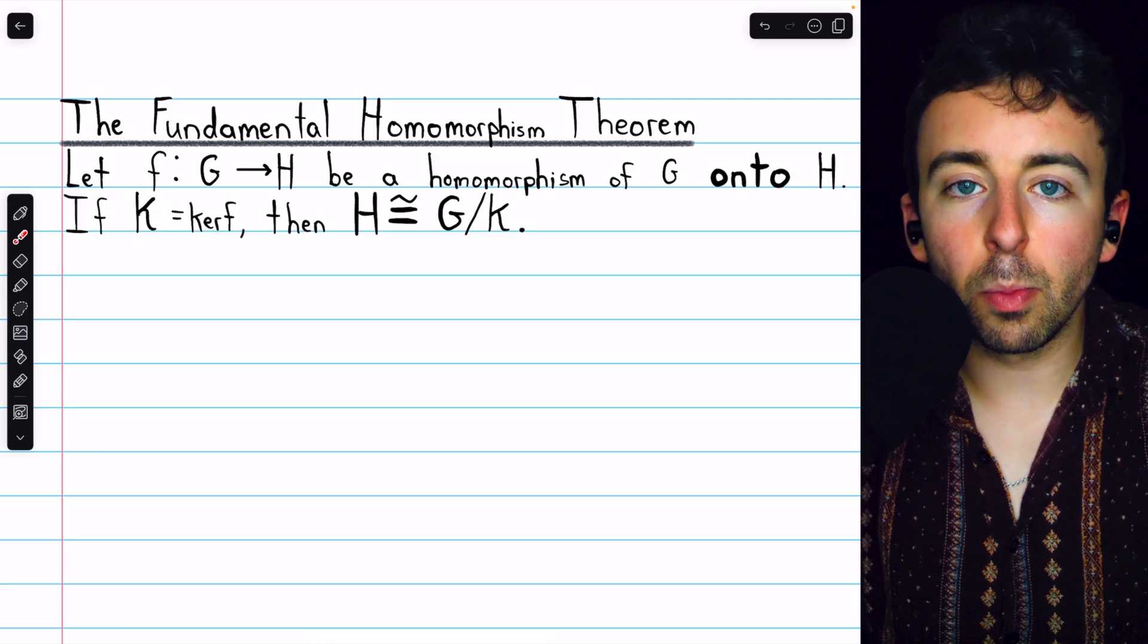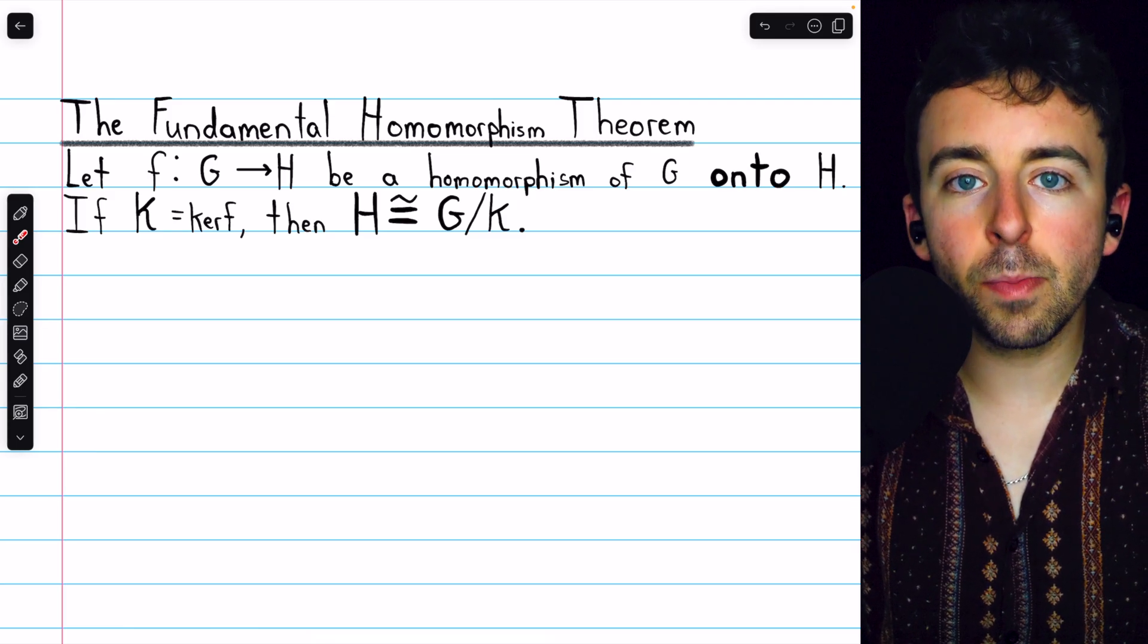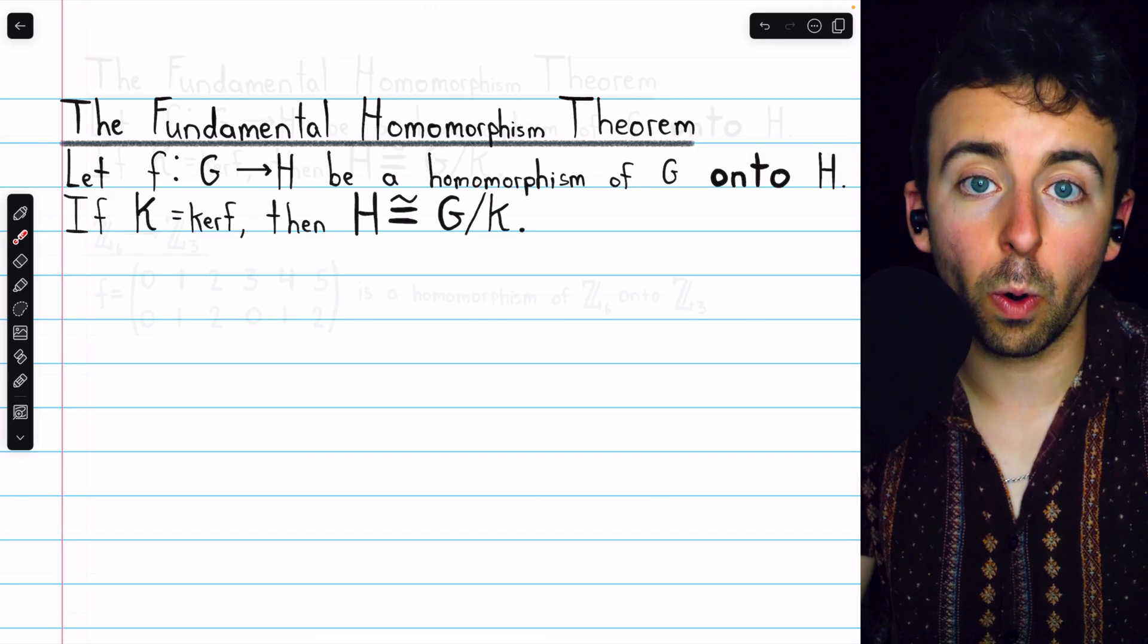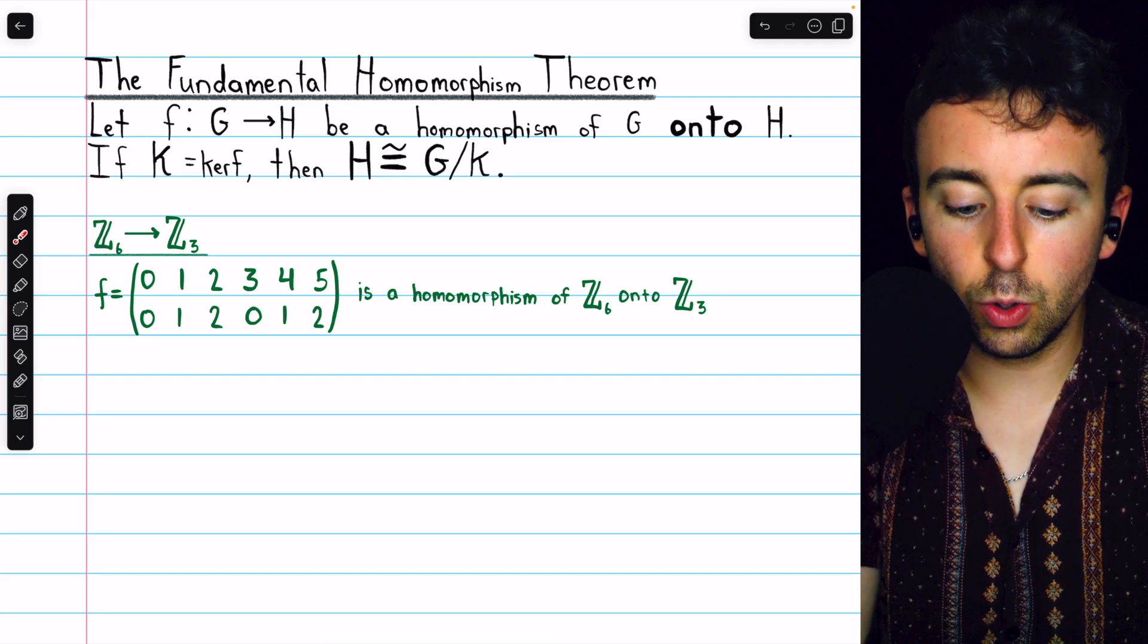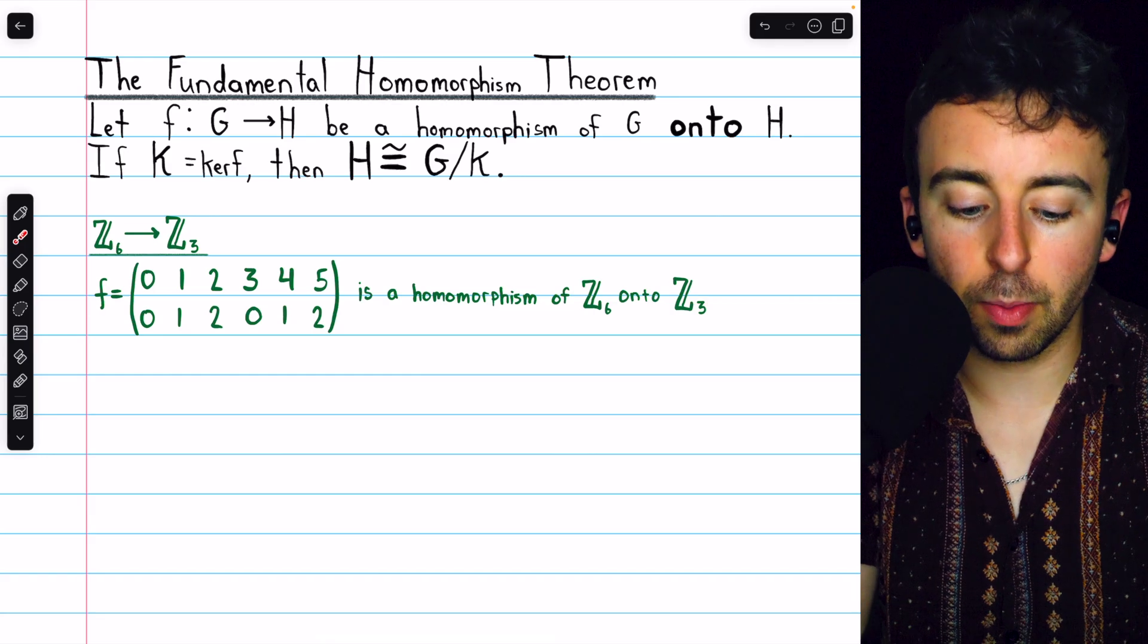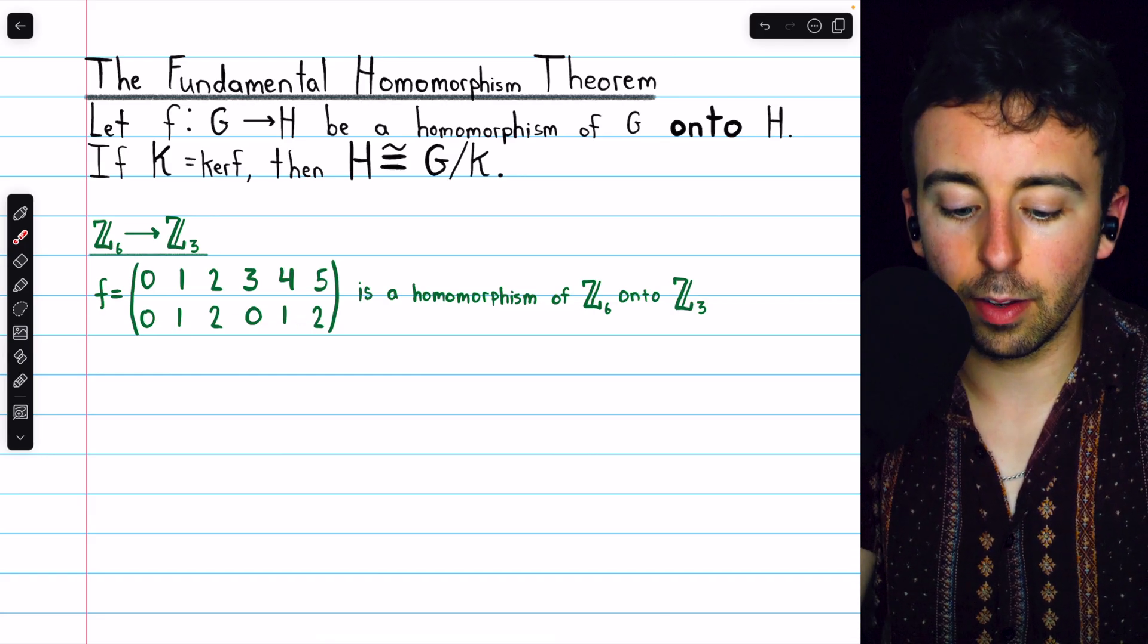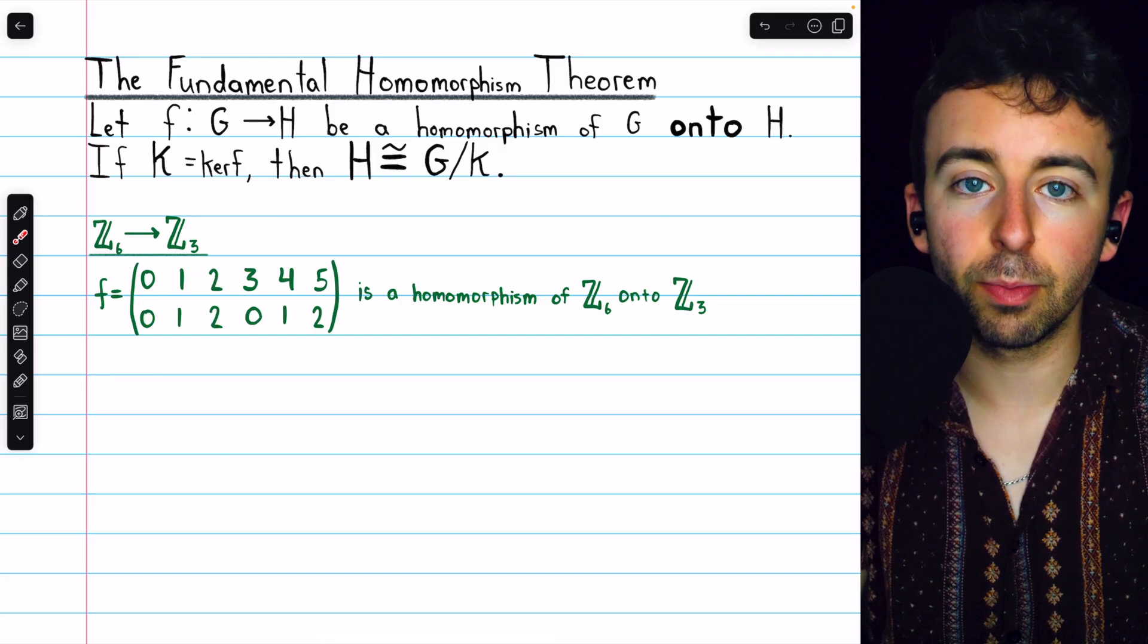We'll see a group, a homomorphic image, a kernel of the homomorphism, and apply the fundamental homomorphism theorem to see what isomorphism is forced. Let's begin with a simple example taking us from Z6 to Z3. This function here is a homomorphism from Z6 to Z3. It's easy to see that it's surjective, it maps 0 to 0, 1 to 1, and 2 to 2, so all of Z3 has been covered.